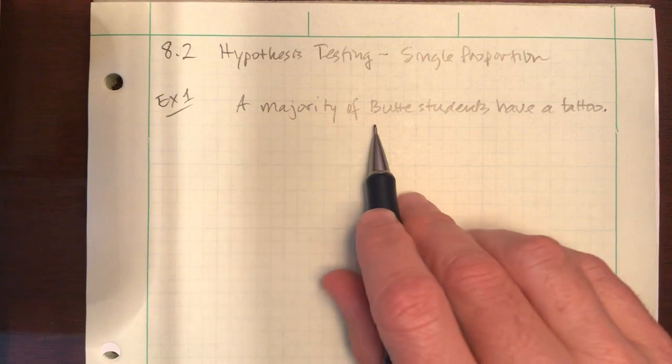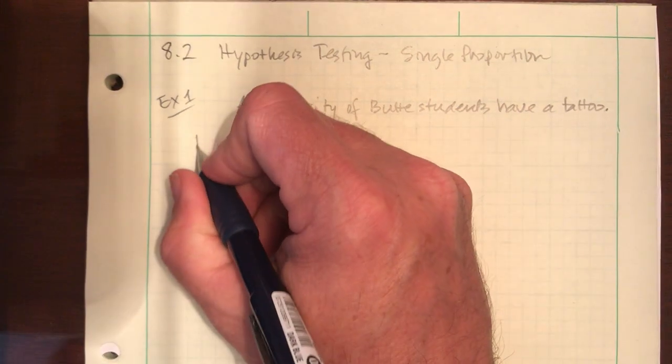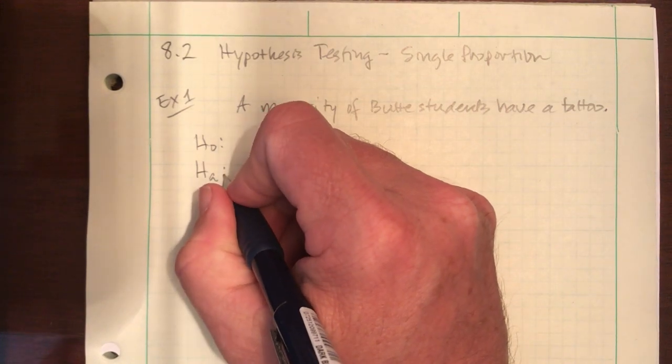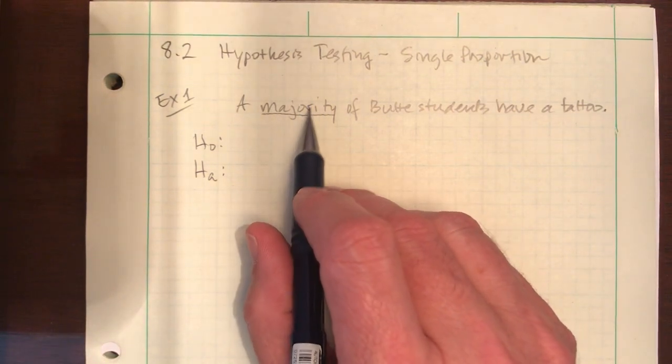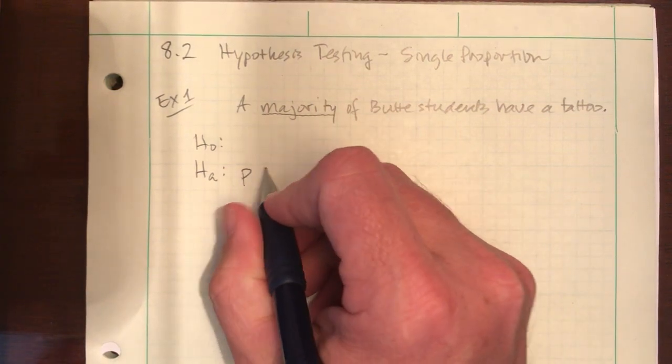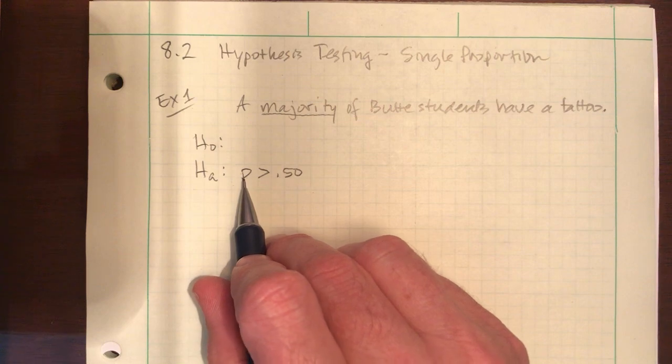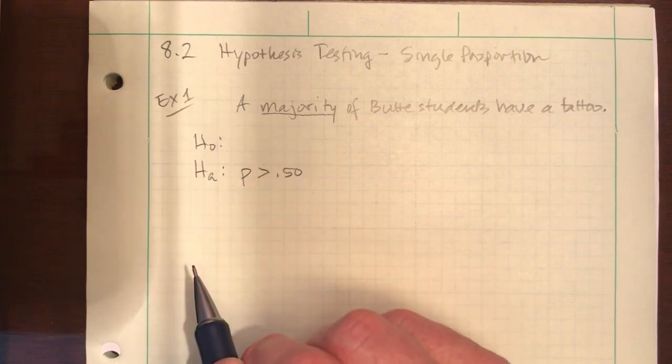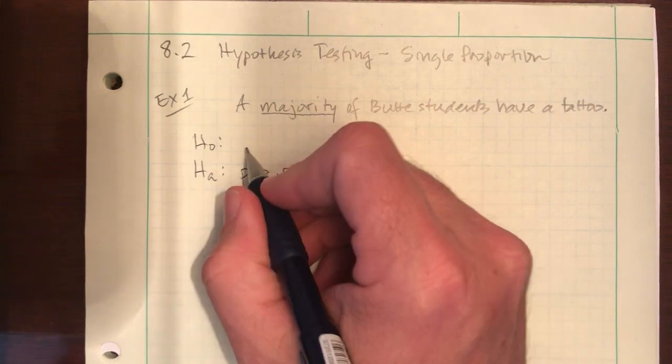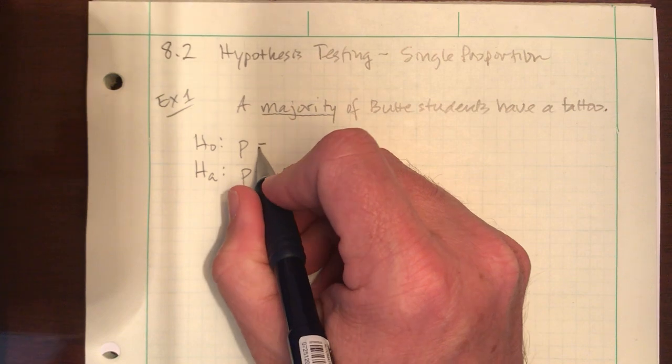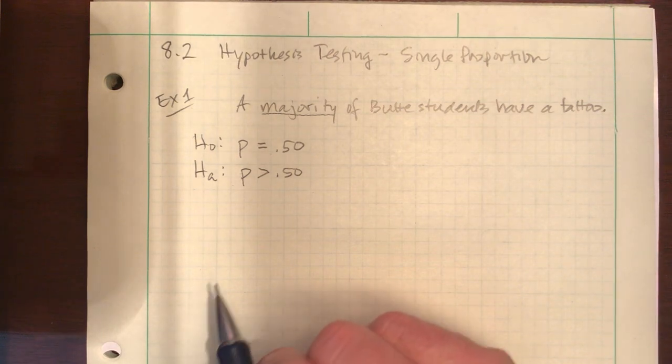Reading this sentence it says a majority of Butte students have a tattoo. We don't know that's true, that's just someone's claim. So step one is convert that sentence into two possible hypotheses. The word majority tells us we're in the land of proportions and majority means anything greater than 50 percent, so that belongs in my alternative: p greater than 0.50. Remember it's not p hat, we're talking about a population parameter. Where do I get my null? It's always the complement of this. So if this is saying p is greater than 0.50, then my complement is p is less than or equal to 0.50, but we also can just get away with saying equals every time for the null.